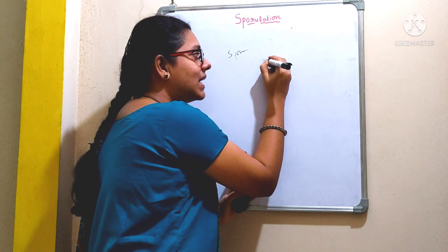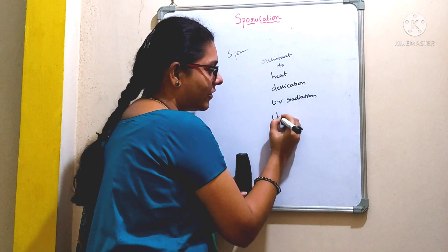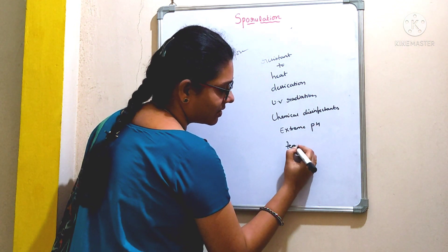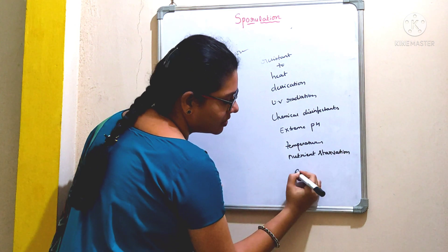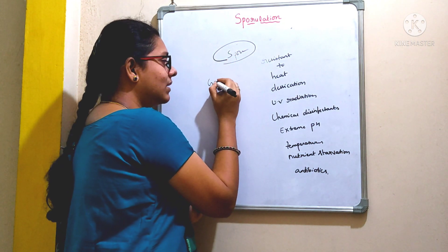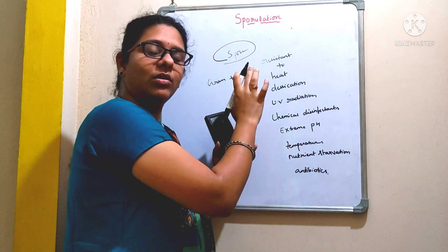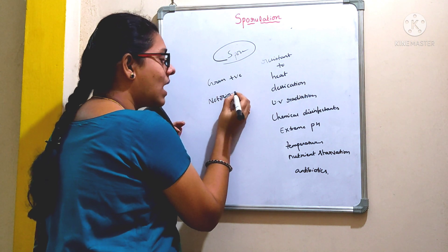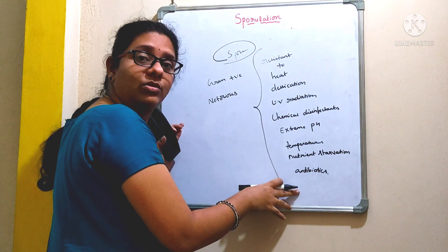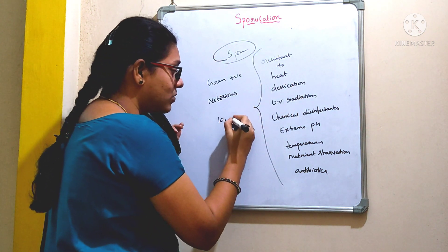Once the bacteria undergo sporulation and form a spore, these spores are highly resistant to heat, desiccation, UV radiation, chemical disinfectants, extreme pH, extreme temperatures, nutrient starvation, and also to antibiotics. Mostly, this spore formation is seen in gram-positive bacteria. That is why we call those microorganisms notorious — because they are highly resistant to all these conditions and can be viable for several years, like up to 10,000 years or more.